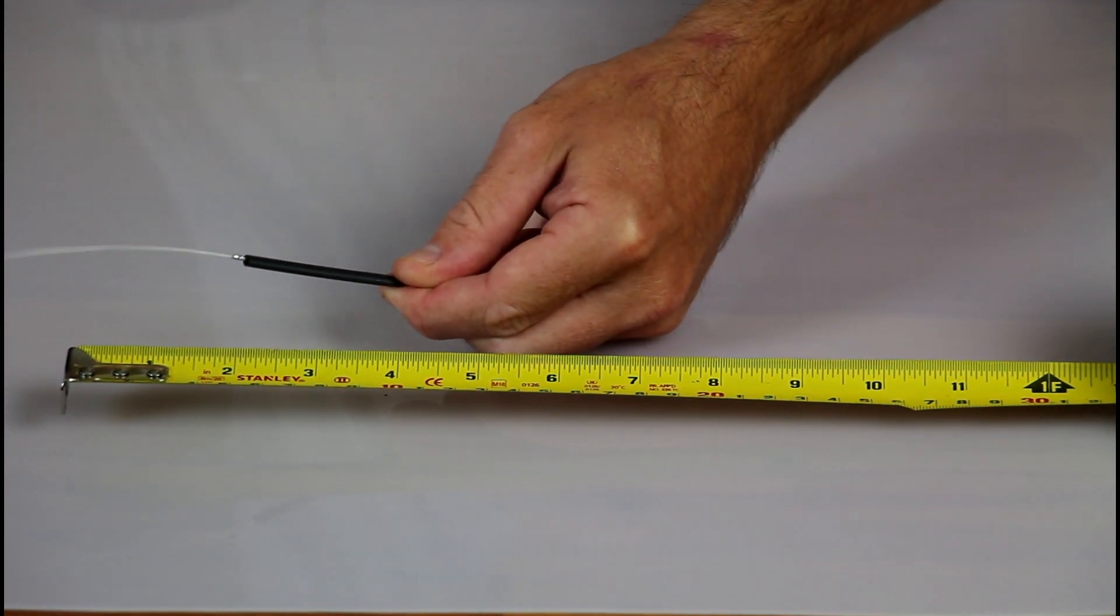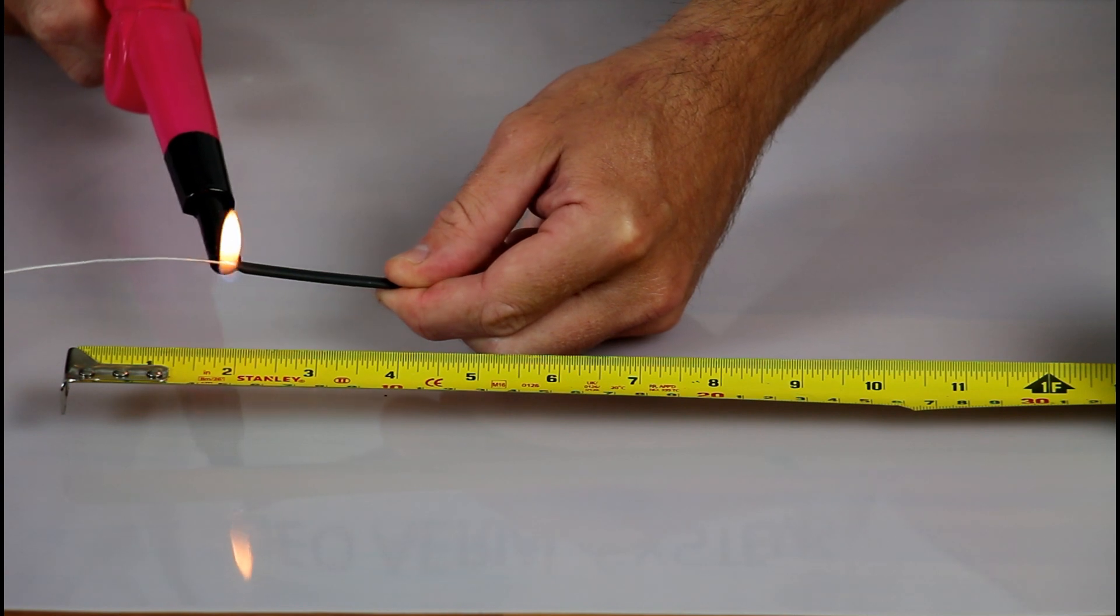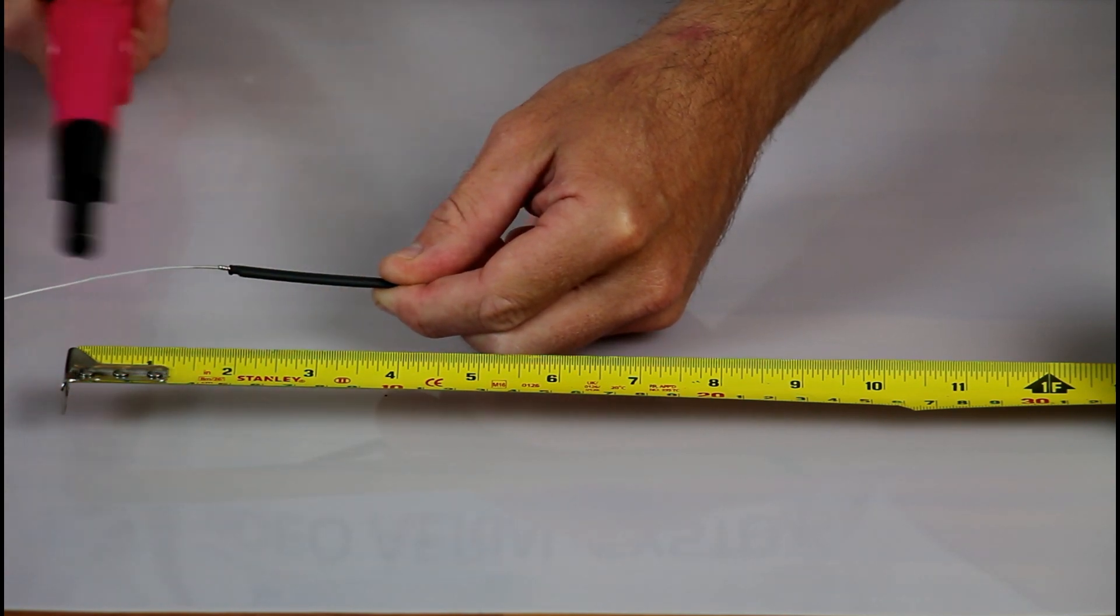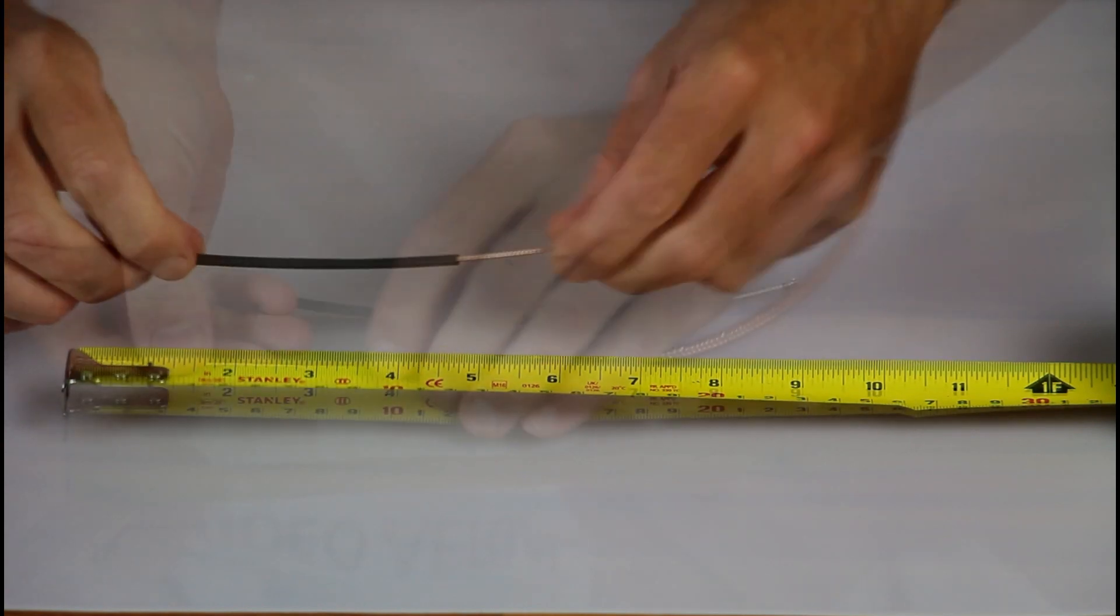Then we'll just go ahead and slide it over top of our coaxial cable and allow the shielded section, the exposed shield, to be exposed. Then notice I'm just shrinking down the very end being very careful only the minimal amount of heat shrink tubing is shrunk.